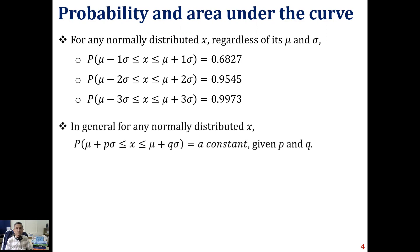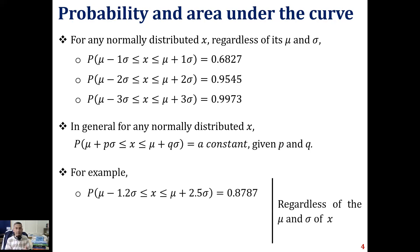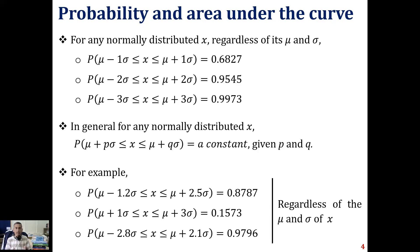This property can be generalized between any two points p*sigma and q*sigma away from the mean, where p and q can be positive or negative. The probability that the variable takes a value between p*sigma and q*sigma from the mean is a constant if p and q are fixed. For example, between minus 1.2 sigma and 2.5 sigma the probability is 0.8787; between 1 sigma and 3 sigma it is 0.1573; and between minus 2.8 sigma and 2.1 sigma it is 0.9796. These values are the same for any normal distribution regardless of mu and sigma.